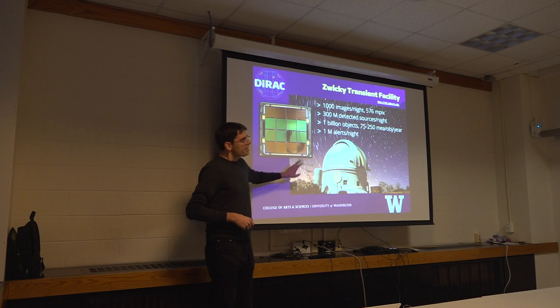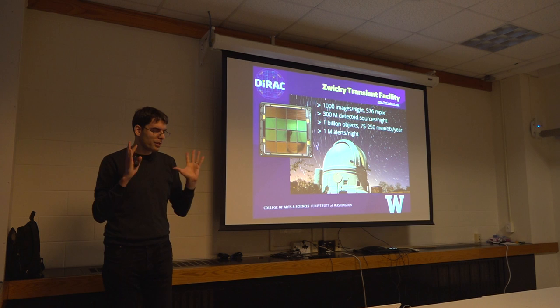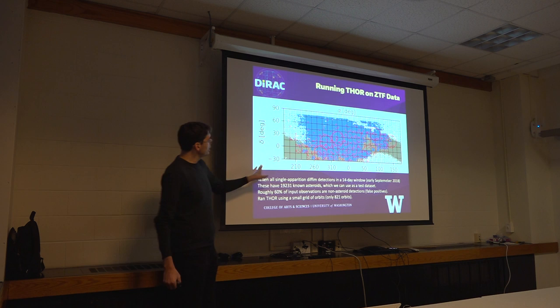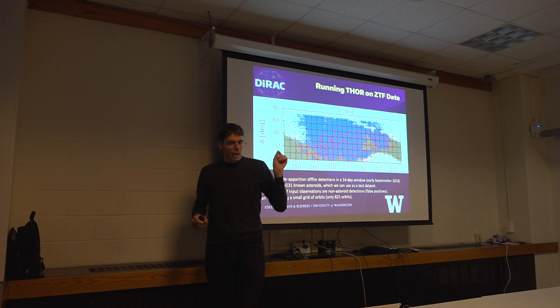Okay. So, does this work? We ran this on the Zwicky Transit Facility dataset. We took a two-week period. This is about 0.1 LSST. This is how I want you to think about it. This is what two weeks of data with ZTF looks like. So, it's the entire sky and then some. The little dots are the locations of reference points for the orbits that were picked.